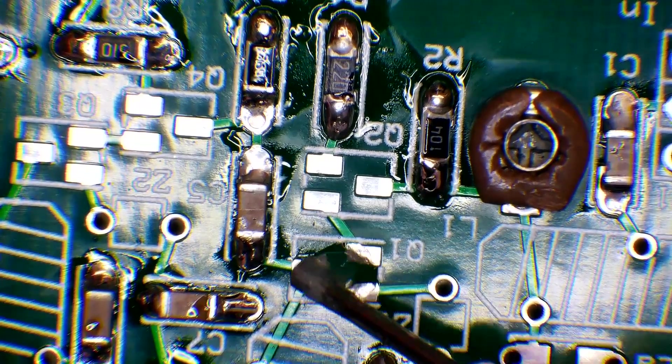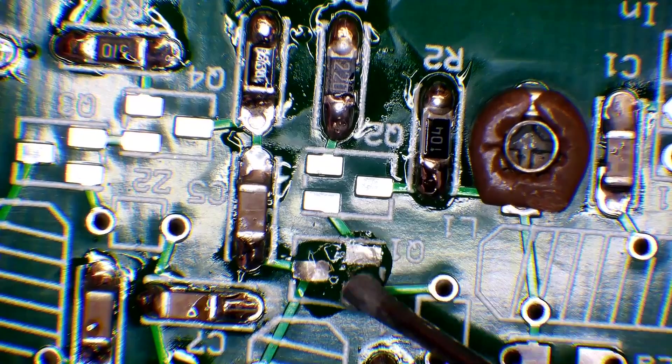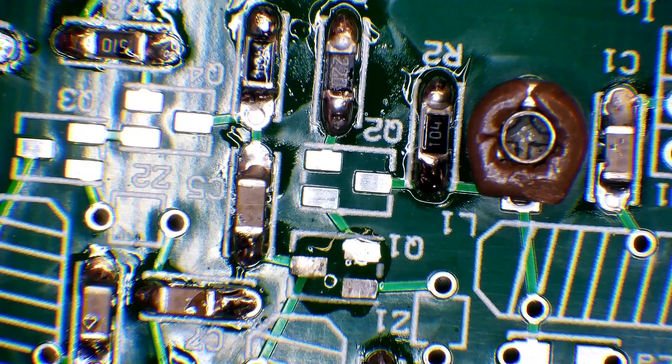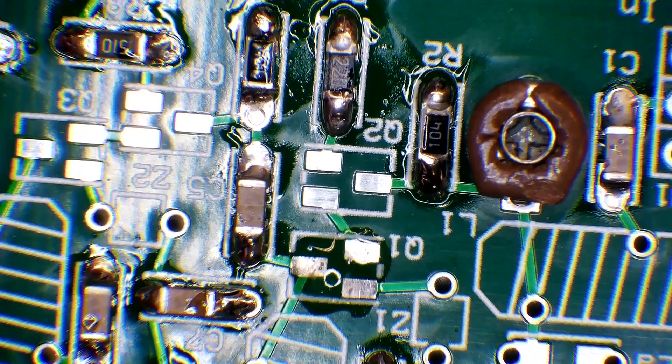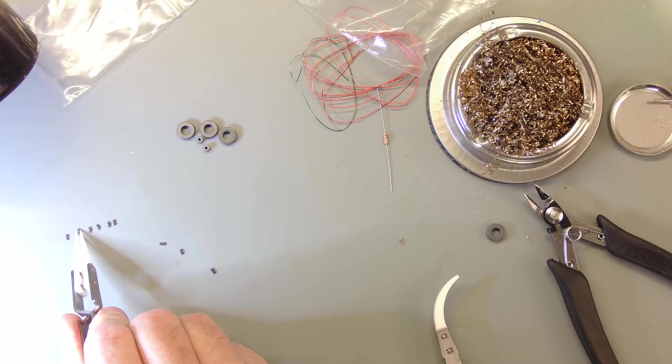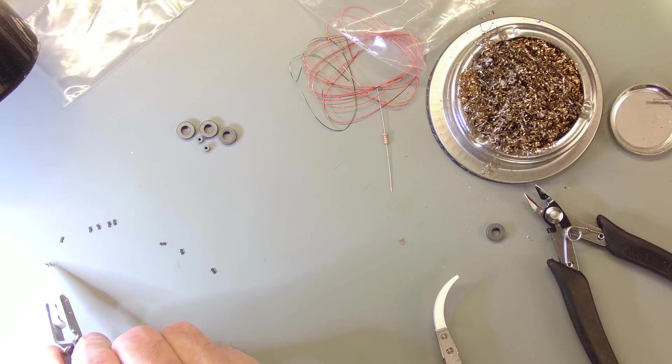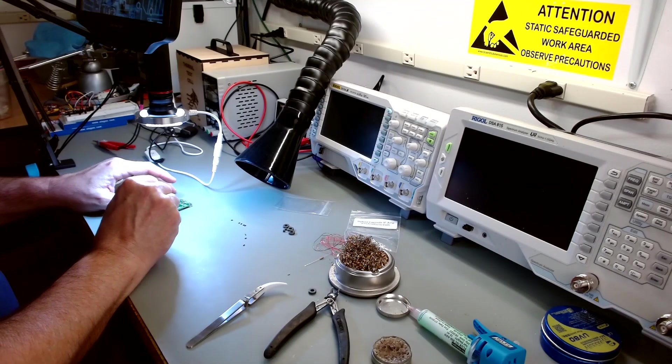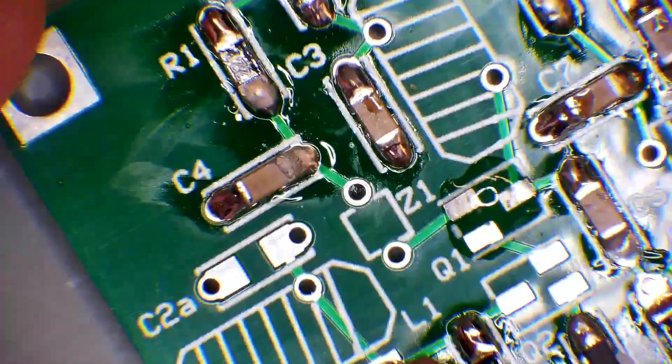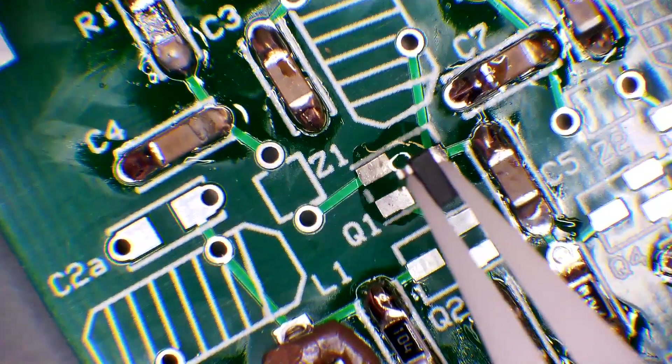So just like with the diodes, we're going to put some flux on here. And then we're going to find us a transistor. And you can clip there, which can be difficult sometimes.